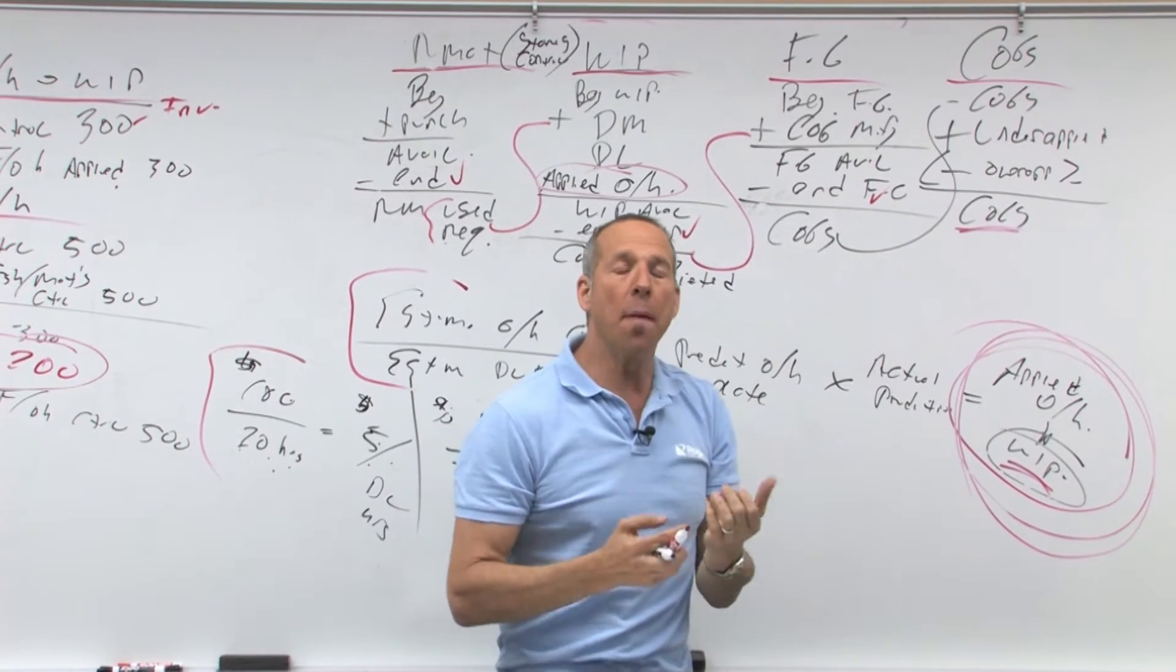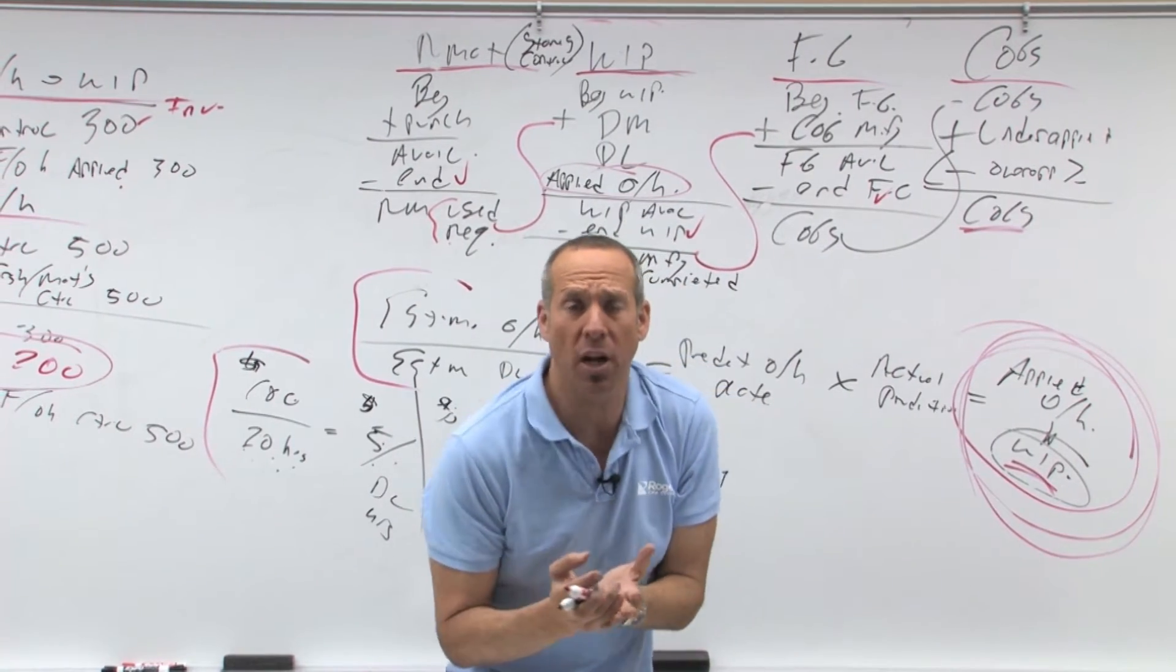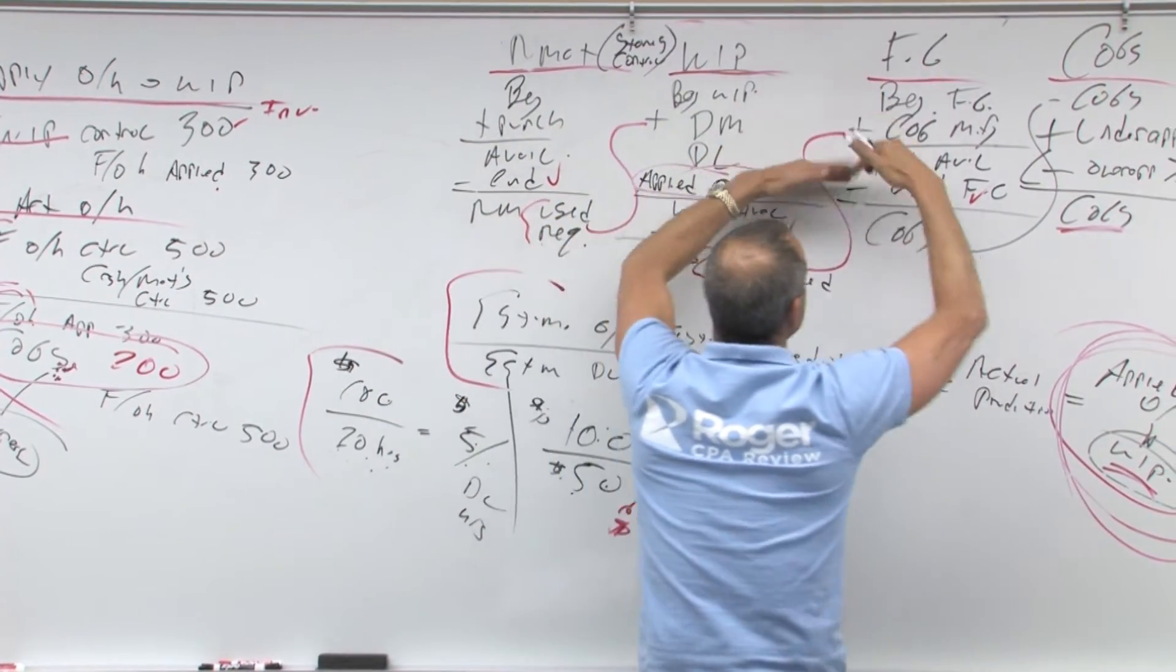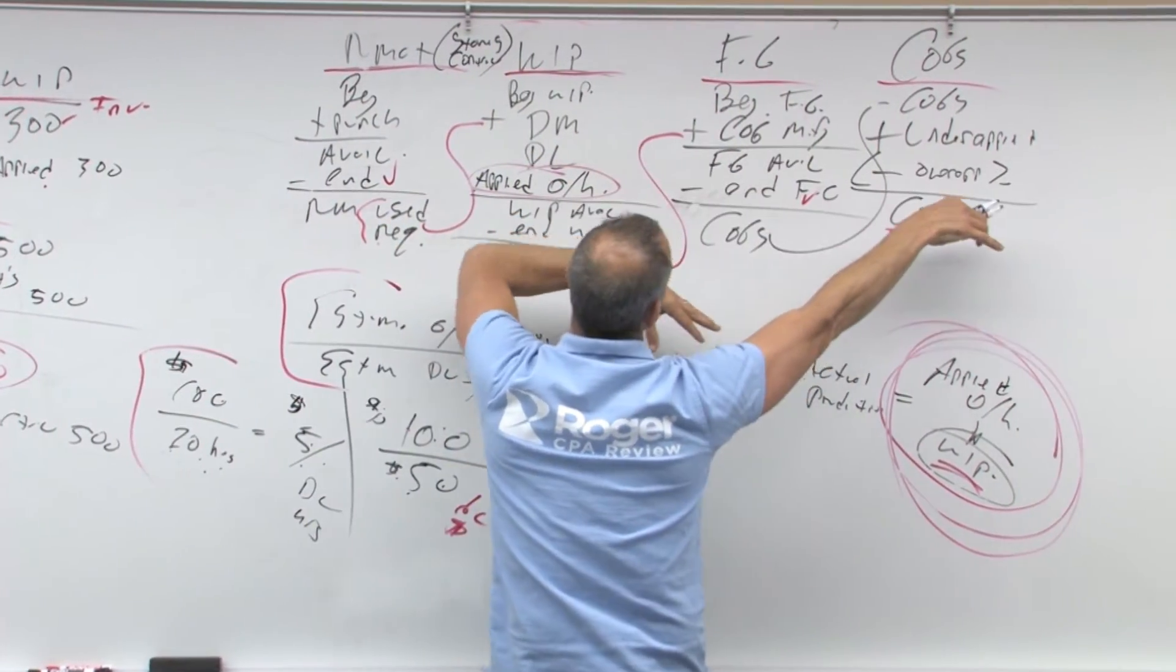So when we talk about a product cost, you're capitalizing it, notice this is ending, product cost, ending, product, ending, product, and then finally you sell it, it becomes an expense.